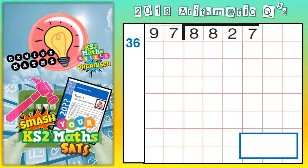Welcome, Arithmetic Ninjas, to question number 36, the final question on the Arithmetic paper. And we've got a division. We've got 8,827 divided by 97.